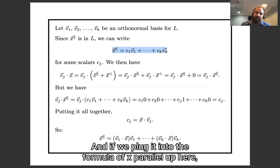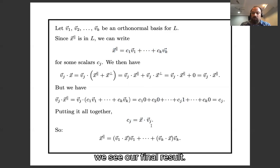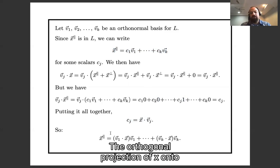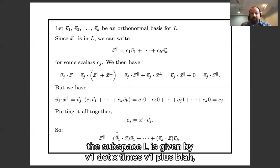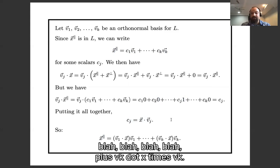And if we plug that into the formula for x-parallel up here, we see our final result. The orthogonal projection of x onto the subspace L is given by v1 dot x times v1 plus blah blah blah, plus vk dot x times vk.